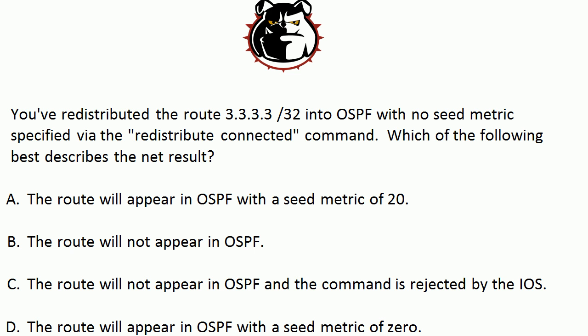You've redistributed the route 3333/32 into OSPF with no seed metric specified via the redistribute connected command. Which of the following best describes the net result? A: The route will appear in OSPF with a seed metric of 20. B: The route will not appear in OSPF. C: The route will not appear in OSPF and the command is rejected by the IOS. Or D: The route will appear in OSPF with a seed metric of 0.